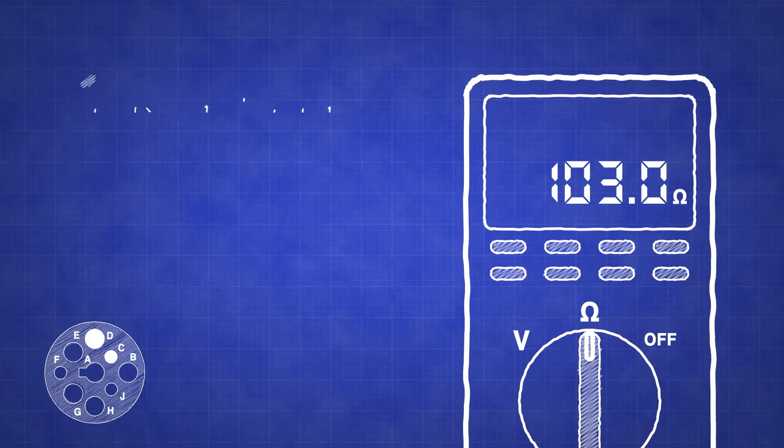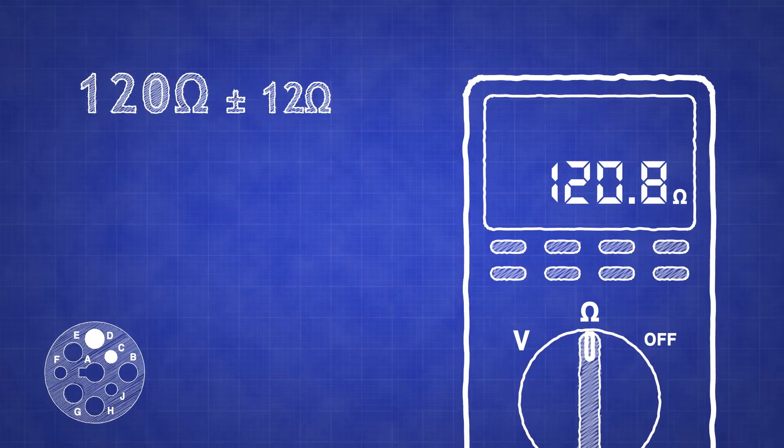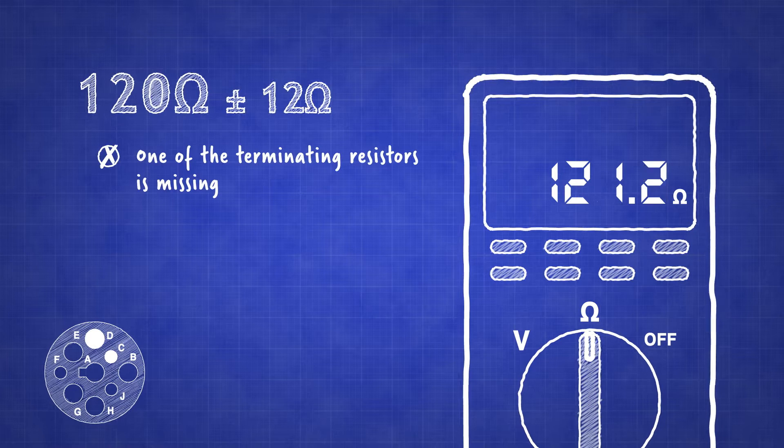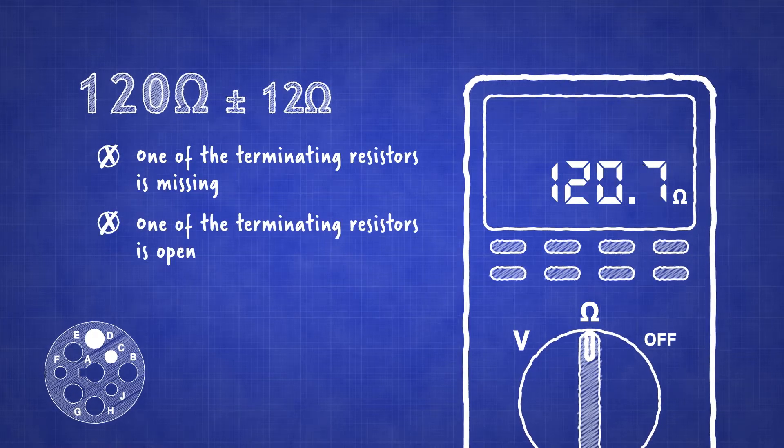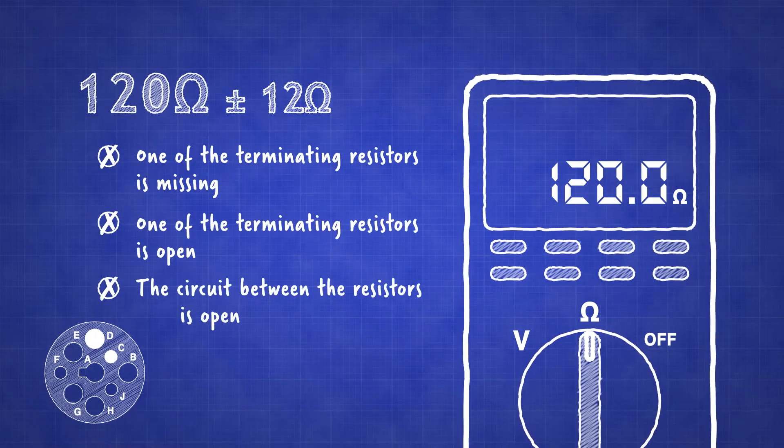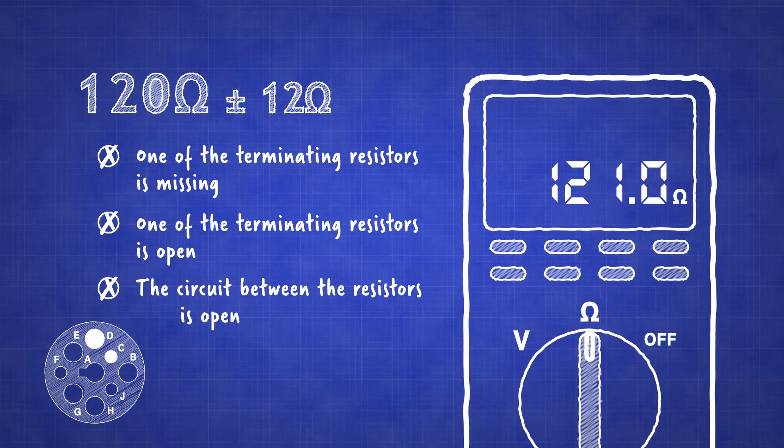However, if the reading is within 12 ohms of 120 ohms, then either one of the terminating resistors is missing, one of the terminating resistors is open, or the circuit may be open anywhere between the terminating resistors.